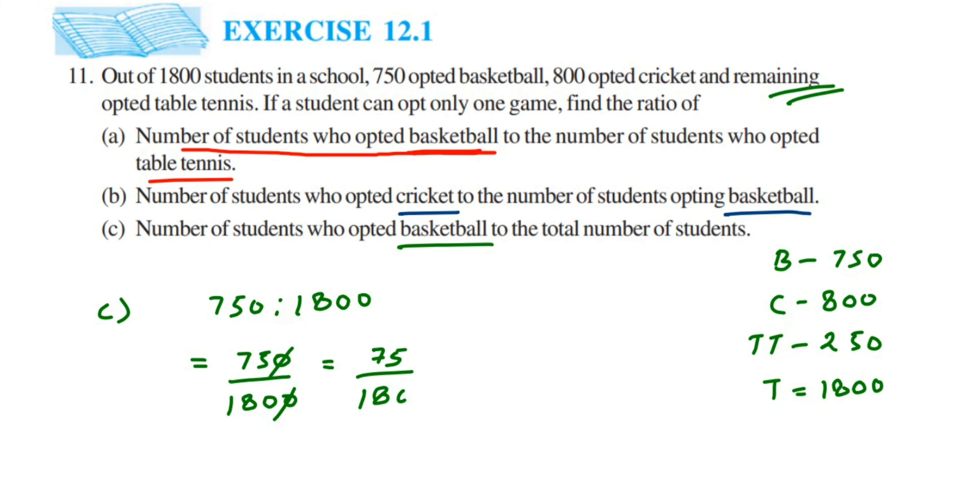Now cancel this in 5 table because the number ends with 5 and 0, so we can cancel this in 5 table. 5 times 15 is 75 and here 5 times 3 is 15, 5 times 6 is 30... 15 so 15 by 36. So 15 by 36 we can again cancel this in 3 table because 15 also goes, 36 also goes. 15 we can cancel by: 3 times 5 is 15 and 3 times 12 is 36.